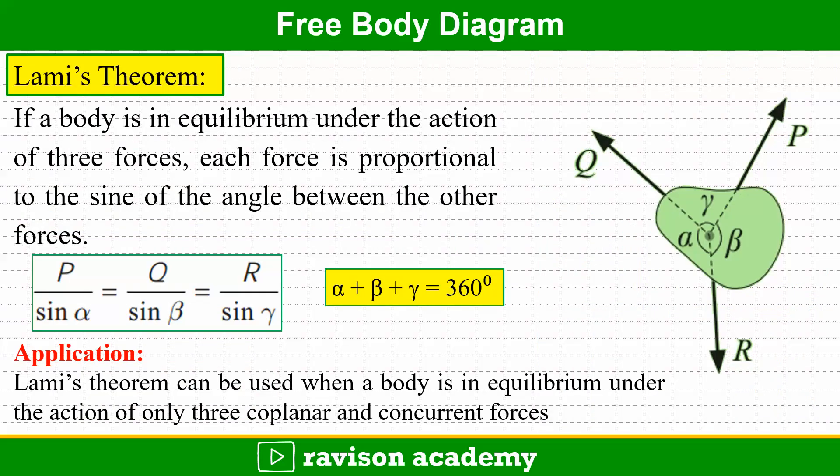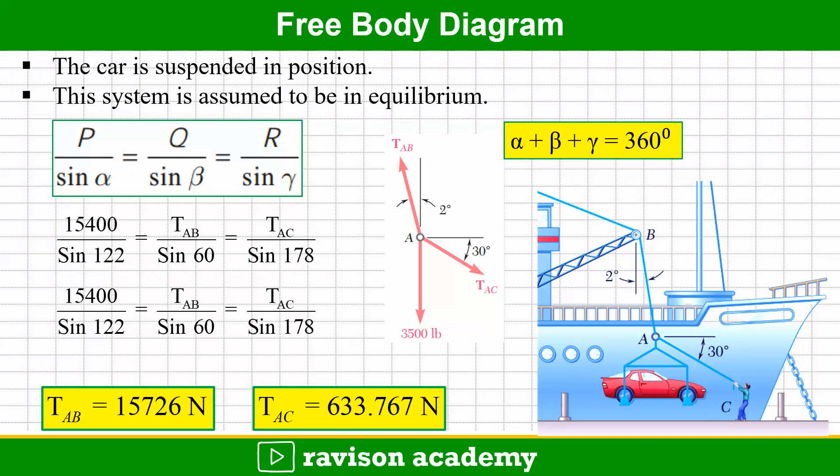The same problem can be approached using Lami's theorem, which states that if a body is in equilibrium under three coplanar concurrent forces, each force is proportional to the sine of the angle between the other two forces: P/sin α = Q/sin β = R/sin γ. Applying this: 15400/sin 122° = T_AB/sin 60° = T_AC/sin 178°. Solving gives T_AB = 15,726 Newtons and T_AC = 633.767 Newtons — the same results as before.